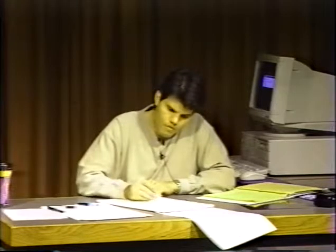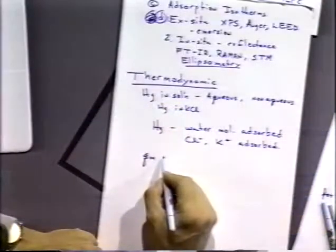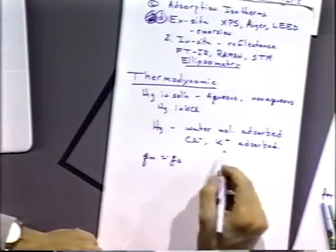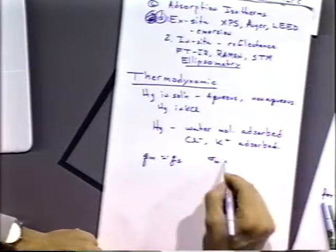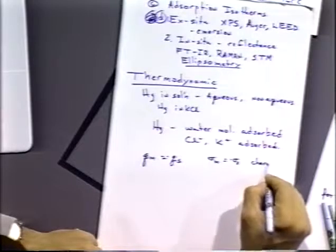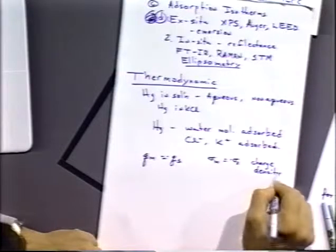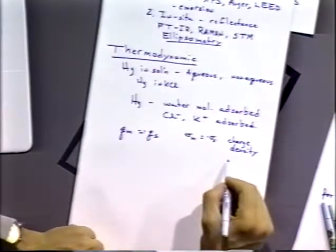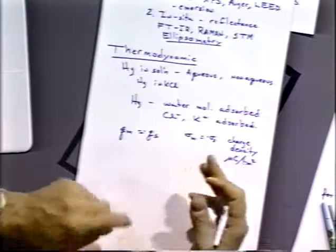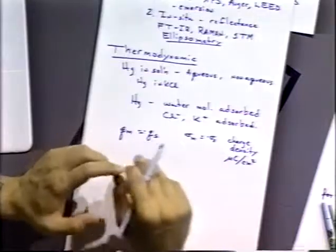There is a charge separation. The question is what is that amount of charge? We're interested in the fact that the charge on the metal must be equal to the charge in the solution. We'll use sigma (σ) to refer to the charge density, typically reported in microcoulombs per square centimeter, which is a convenient unit and basically the scale of charge we expect to see in that region.